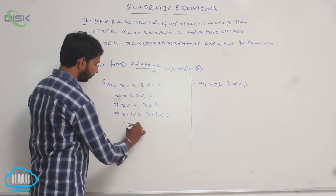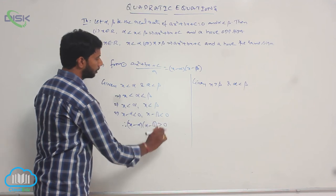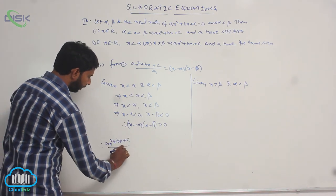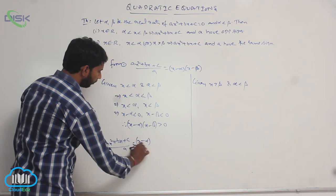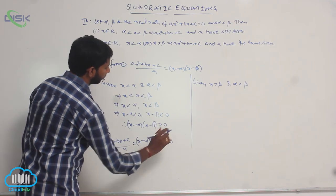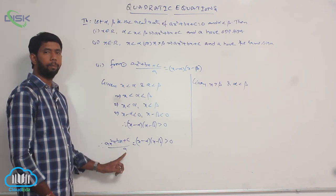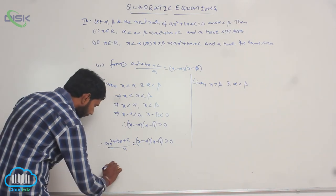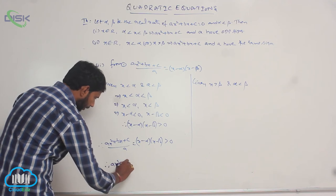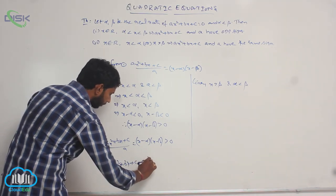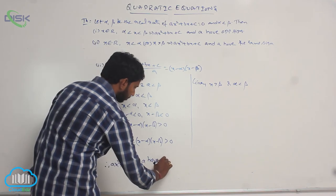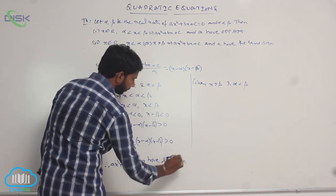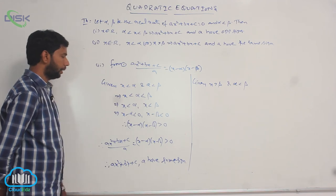Then their product is positive: (x - α)(x - β) is greater than 0. Therefore, Ax² + Bx + C divided by A equals (x - α)(x - β), which is greater than 0. That is, Ax² + Bx + C divided by A is greater than 0. Therefore, Ax² + Bx + C and A have the same sign.